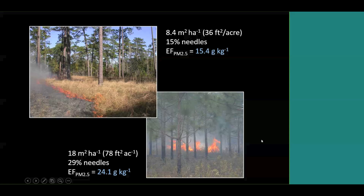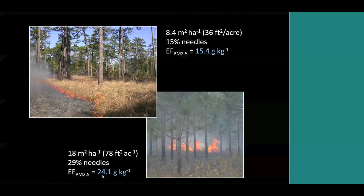As examples of how different environmental conditions influence the emission factor: splitting the data with lower basal area — about 8.4 meters squared per hectare, or 36 feet squared per acre — and about 15% pine needles, we had about a 15.4 grams per kilogram emission factor. Whereas going up to something close to 80 square feet per acre, getting closer to a closed-canopy pine forest, the emission factor goes up by about 10 grams per kilogram — showing that both stocking level and percent pine needles influence emission factors.